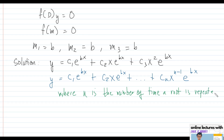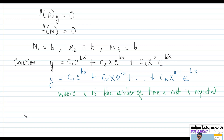So for example, if we have root b repeated three times, this corresponds to c₃ and x squared, just as described in the general formula. Let's now apply that to a specific problem.